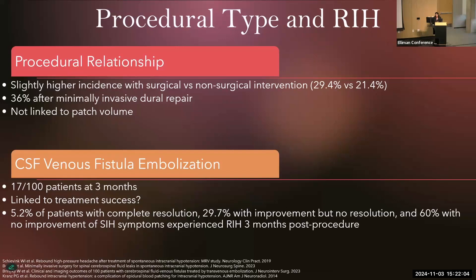While we're still learning about individual risk factors, what do we know about how procedural type affects RIH? This is also limited by a lack of formal diagnostic criteria and standardized time points. But there have been several nice studies. Dr. Sheving showed a slightly higher incidence of RIH in people who underwent a surgical intervention as opposed to a non-surgical one. Dr. Beck found that about 36% of his patients after minimally invasive dural repair developed RIH. And Dr. Kronz found no link to patch volume in the development of RIH. There is also wide variability in the data about RIH after CSF venous fistula embolization.